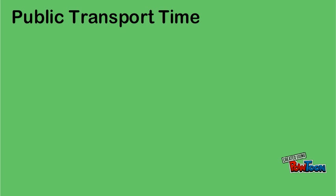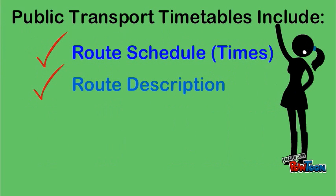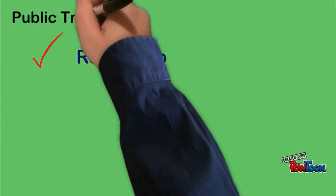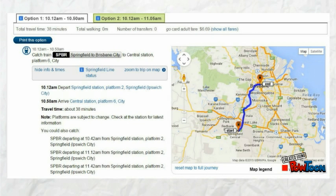Public transport timetables include the route schedule, which means the times when the trains, bus, ferry or trams are scheduled to arrive. Timetables also include the route description, which is the stops the train, bus, ferry or tram will make. Timetables also include a route map so you know where you are heading by looking at the map. Here is an example of what a route schedule, route description and route map looks like online.